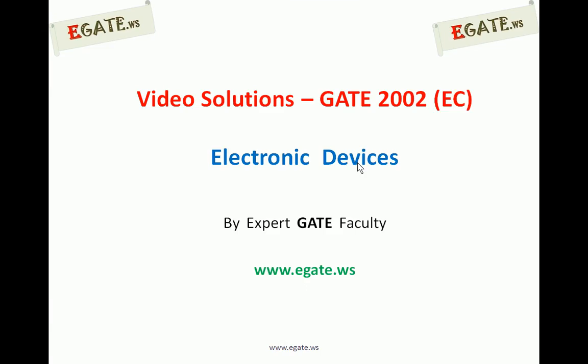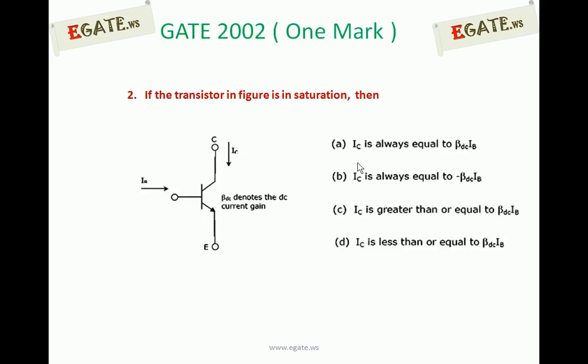Hello. We are discussing Gate 2002 ECE paper and the topic is Electronic Devices. Look at the diagram. It is a simple NPN transistor where the currents IB and IC are indicated.